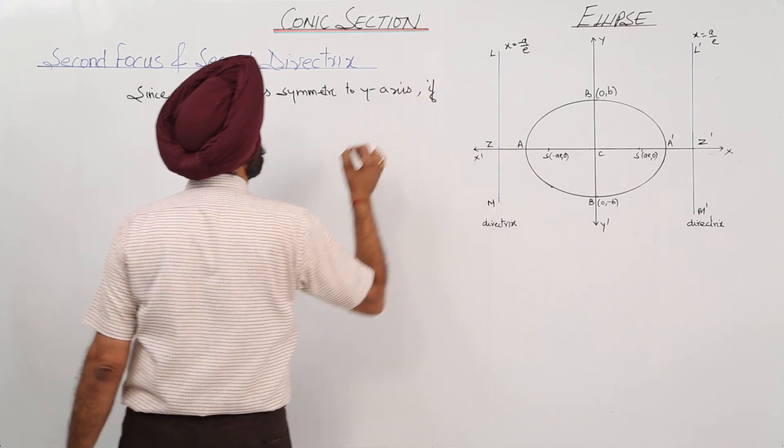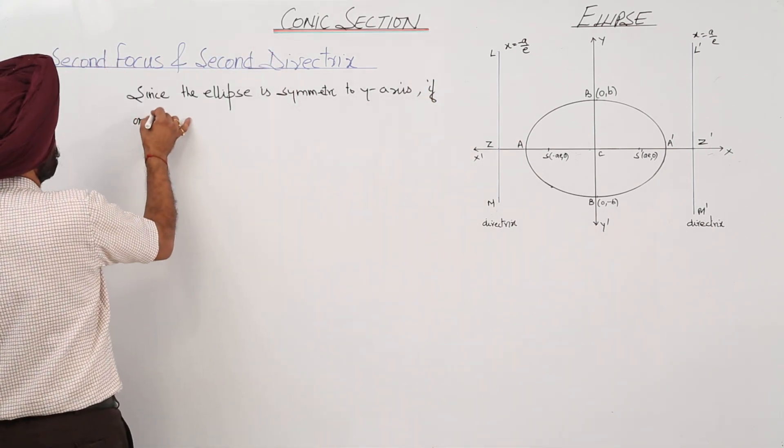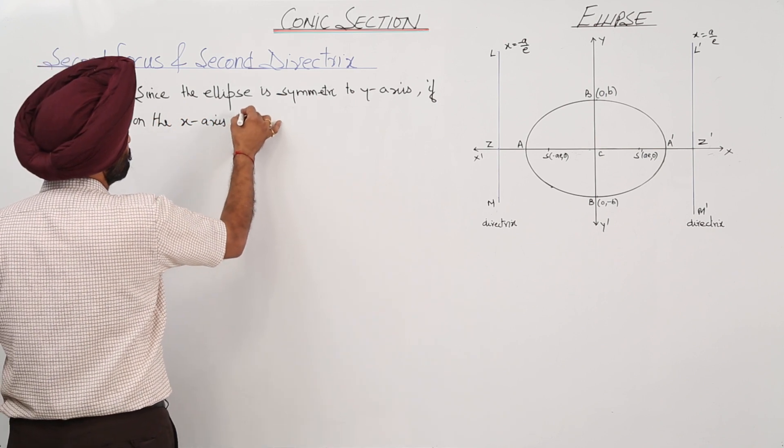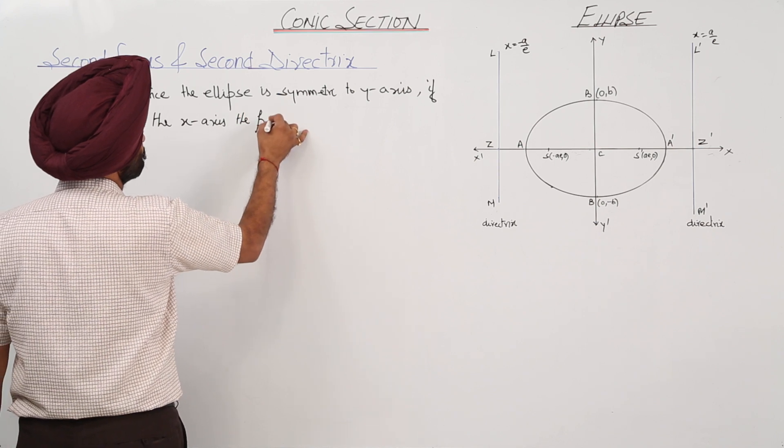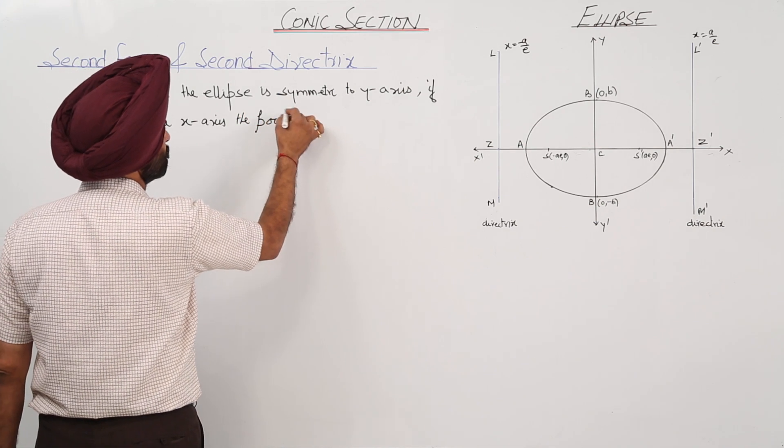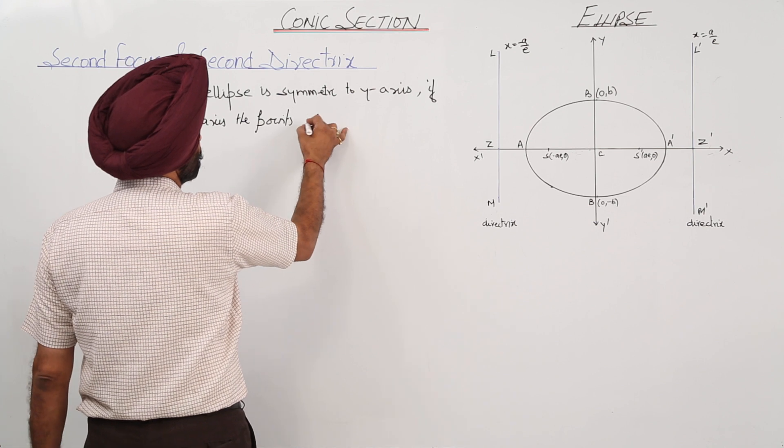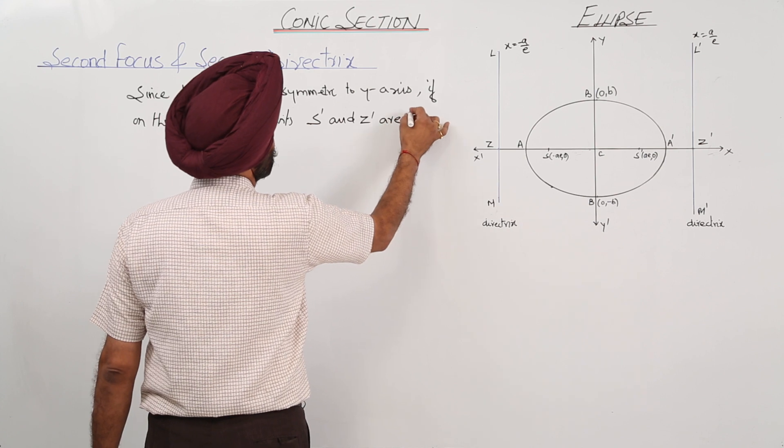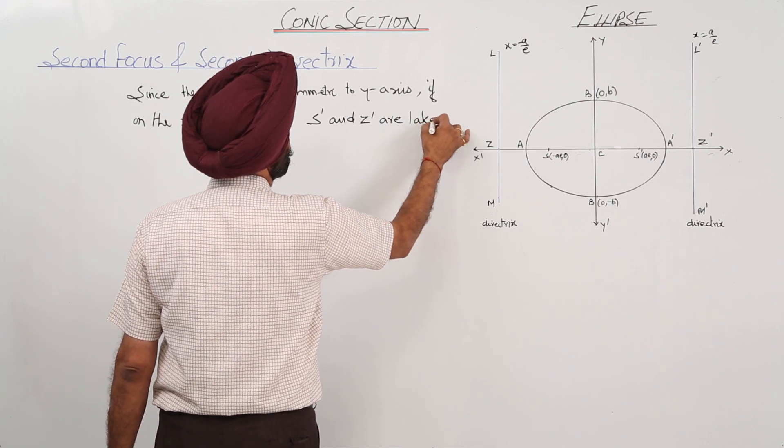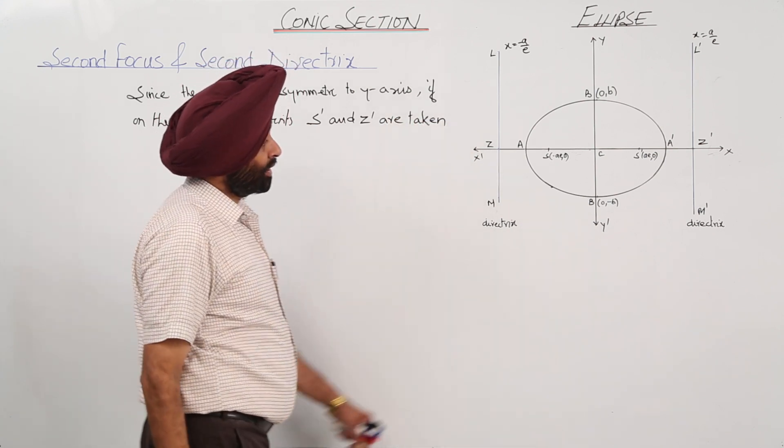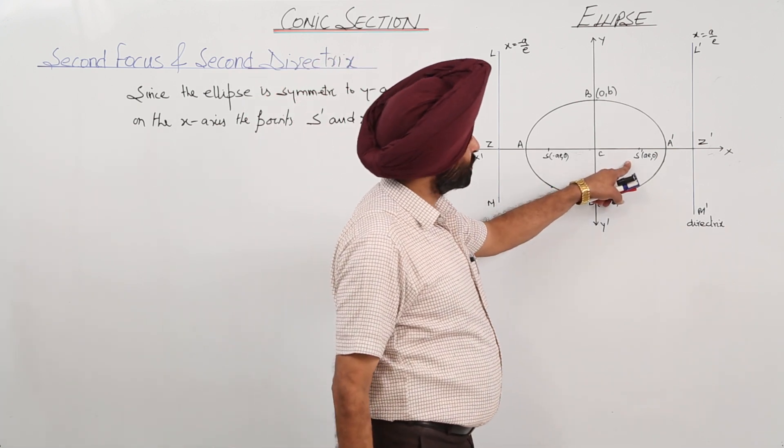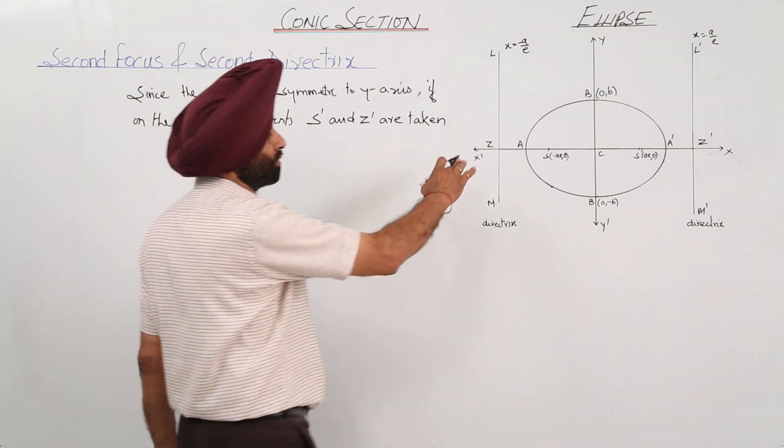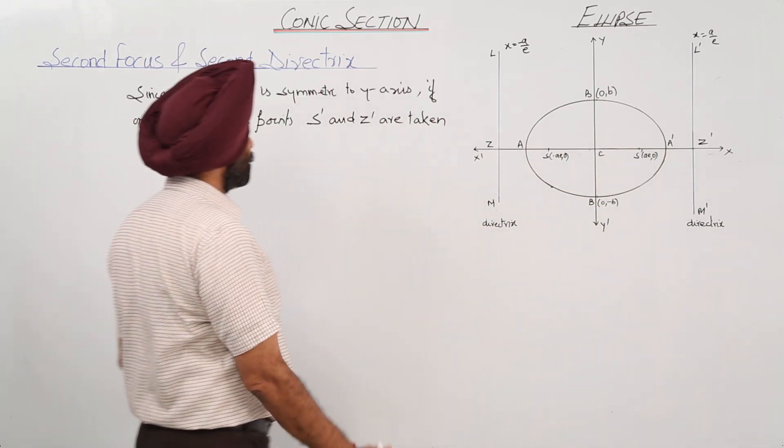Now, if on the x axis the points S dash and Z dash are taken - already I have marked it. S dash, sorry not Z, S dash and Z dash, these points are on the x axis are taken.